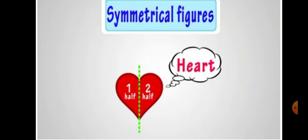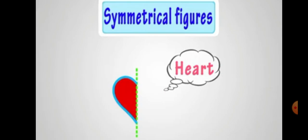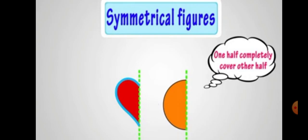Now here we have a heart. This heart is divided into two equal halves. Here you can see one half completely covers the other half. So this green dotted line is known as the line of symmetry because it divides the heart into two equal parts.